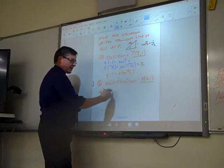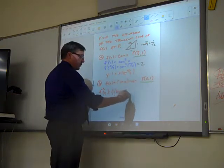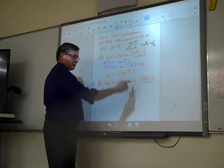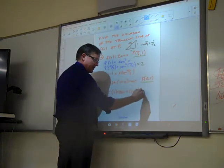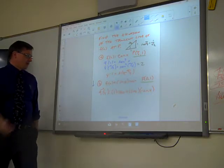The derivative of 1 plus x is just 1. Cosine x plus, then 1 plus x stays. Derivative of cosine x is negative sine x.